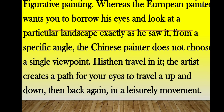A classical Chinese landscape is not meant to reproduce an actual view, as would a Western figurative painting. Whereas the European painter wants you to borrow his eyes and look at a particular landscape exactly as he saw it from a specific — that is, particular — angle, the Chinese painter doesn't choose a single viewpoint. His landscape is not a real one, and you can enter it from any point.